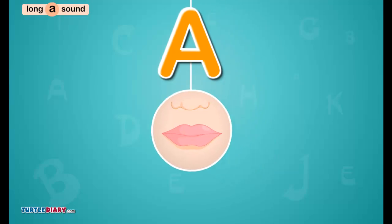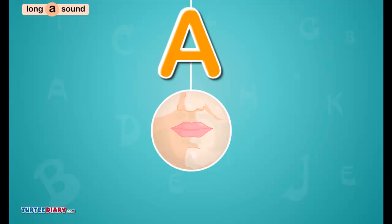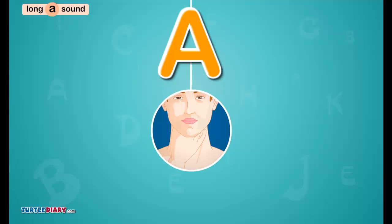How to make the sound. Open your mouth with lips spread out. Keep your tongue in the middle of your mouth to make the A sound as in ape. Try again. This time, put your hand on your throat. It moved or vibrated.